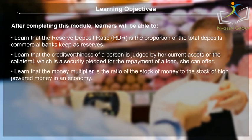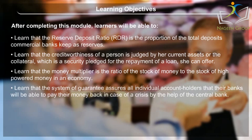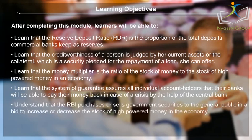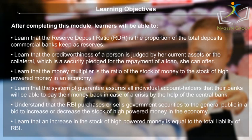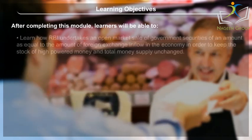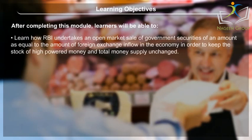Learn that the money multiplier is the ratio of the stock of money to the stock of high-powered money in an economy. Learn that the system of guarantee assures all individual account holders that their banks will be able to pay their money back in case of a crisis with the help of the central bank. Understand that the RBI purchases or sells government securities to the general public to increase or decrease the stock of high-powered money. Learn how RBI undertakes an open market sale of government securities equal to the amount of foreign exchange inflow in the economy in order to keep the stock of high-powered money and total money supply unchanged.